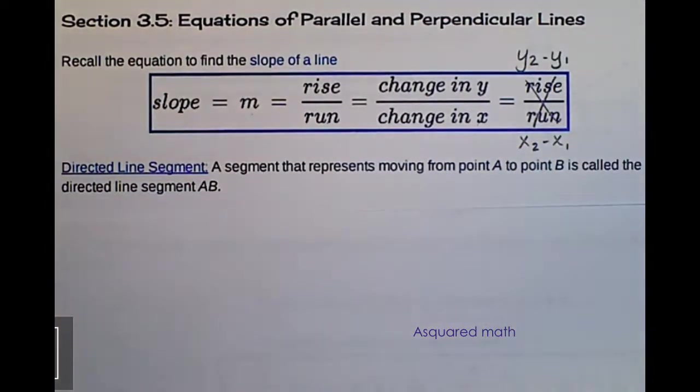So we are going to define a directed line segment, and this is a segment that represents moving from point A to point B, and is called the directed line segment AB.